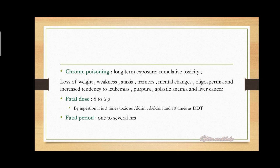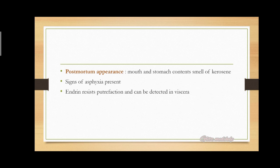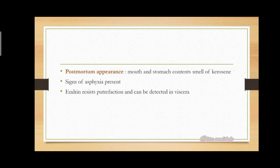The lethal dose of endrin is about five to six grams. By ingestion, it is three times as toxic as aldrin and dieldrin, and ten times as toxic as DDT. The fatal period is one to several hours depending on dosage. Postmortem appearance: mouth and stomach contents smell of kerosene; signs of asphyxia are present. Endrin resists putrefaction, so it can be detected in the viscera quite some time after death.